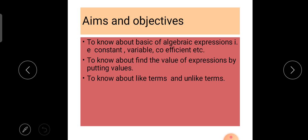The aims and objectives of the chapter are: to know about basics of algebraic expressions such as constant, variable, coefficient, etc.; to know about finding the values of expressions by putting the values; and to know about like terms and unlike terms.